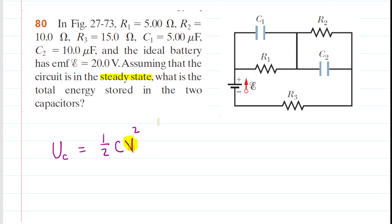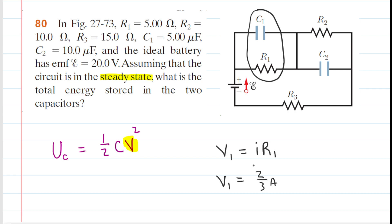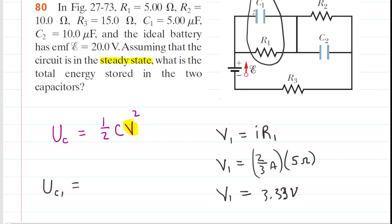We have the capacitance values, but we need the potential across the plates of C1 and C2. Looking carefully at C1, we notice it is in parallel with R1. When circuit elements are in parallel, they have the same potential difference. So our trick is to find the potential difference across R1, and that gives us the potential difference across the plates of C1. We calculate it by taking the current — two-thirds amps — and multiplying by R1. This gives a potential difference across R1 of 3.33 volts, which is also the potential across C1.